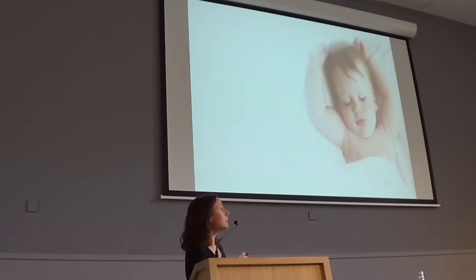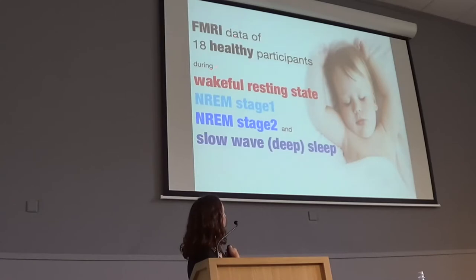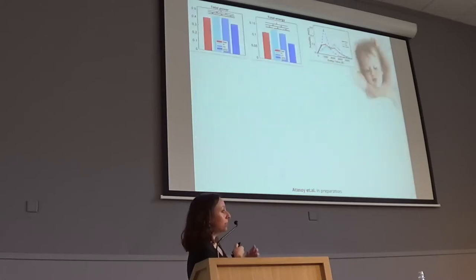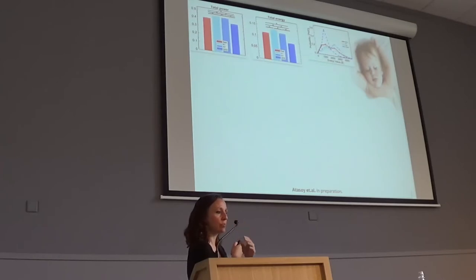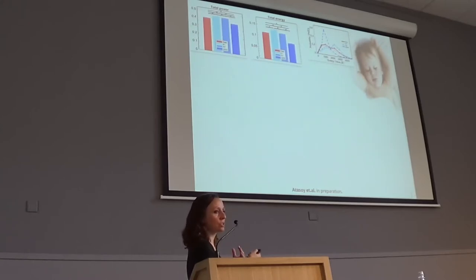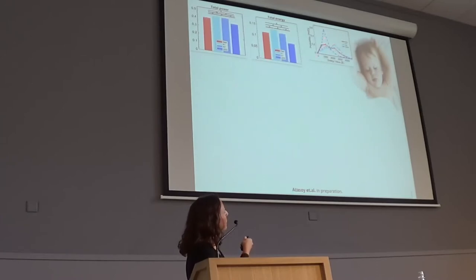Finally, we looked at the sleep state, examining fMRI data of 18 healthy participants in the wakeful resting state and the early sleep stages: non-REM stage 1, non-REM stage 2, and deep sleep. Very interestingly, in the early sleep stages we found an increase in total power and total energy — following what we found for meditation and the psychedelic state. But the deep sleep condition showed the exact opposite — the peak of the probability distribution occurs at a very low energy state.